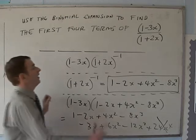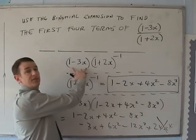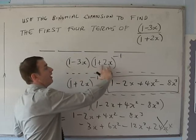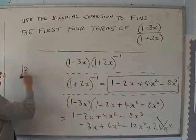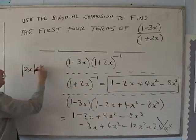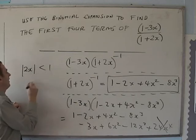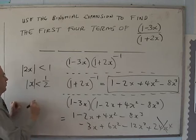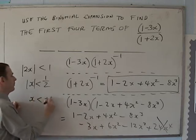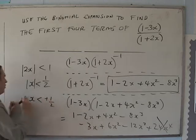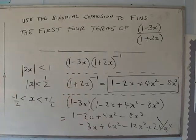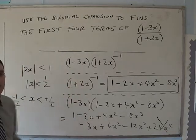What is this valid for? The (1 − 3x) part is valid for anything. But for (1 + 2x)^(−1), the modulus of 2x must be smaller than 1, which means the modulus of x must be smaller than one half — so x is smaller than +1/2 and bigger than −1/2. That is the valid range for the expansion.